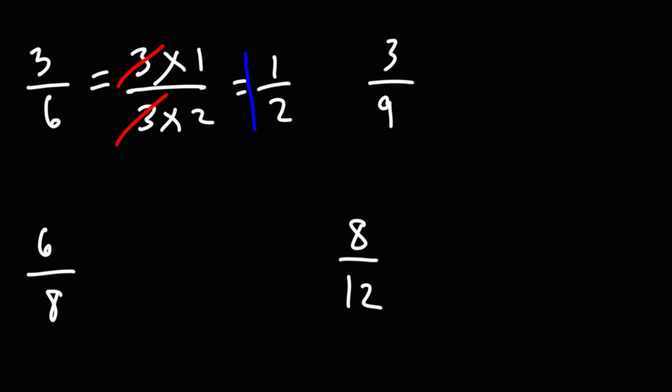What we have left is 1 over 2. So that's a quick and simple way of how we can simplify the fraction 3 over 6, which is equal to 1 over 2.